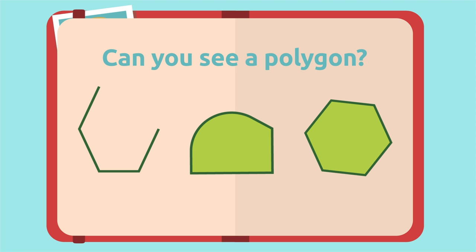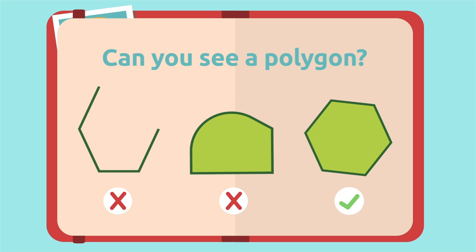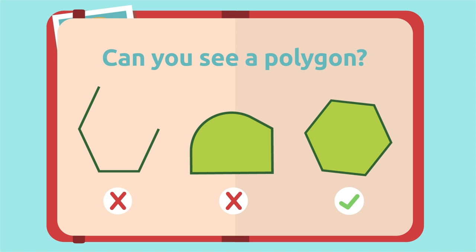The first shape is not a polygon because its polygonal line is not closed. The second shape is not a polygon either because it has a curved side. The third shape is a polygon because it's formed by a closed polygonal line.